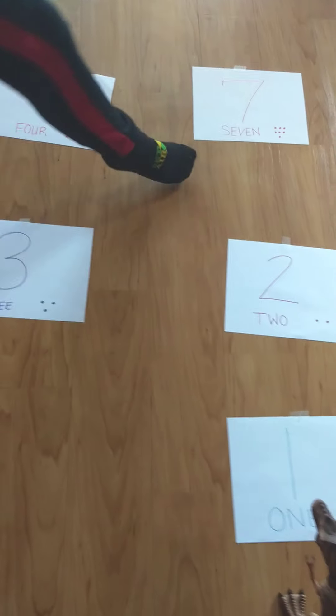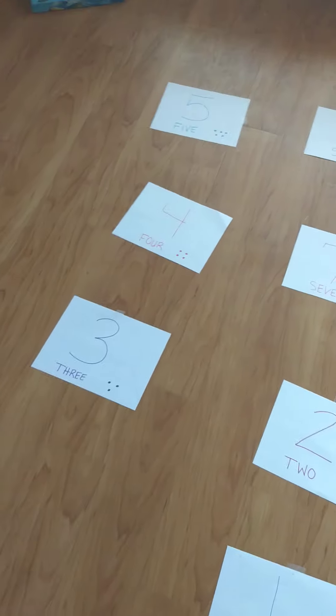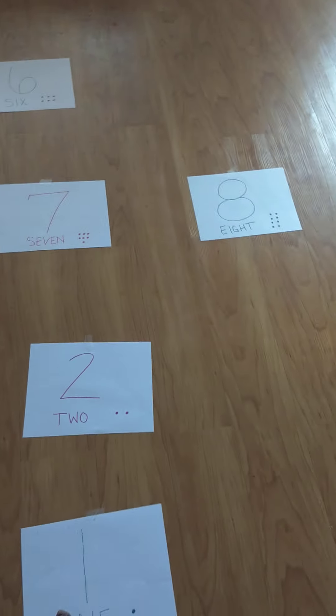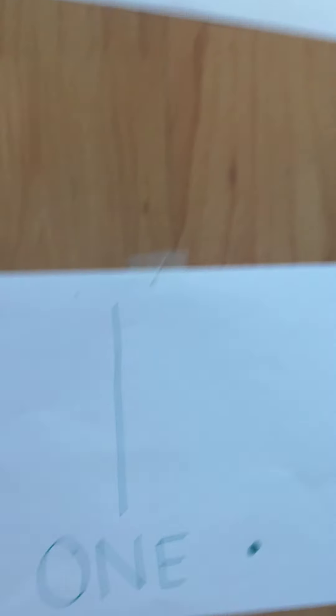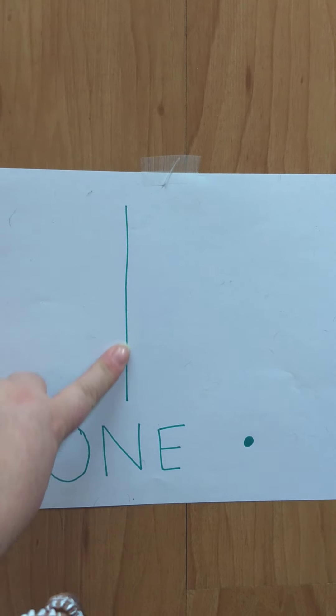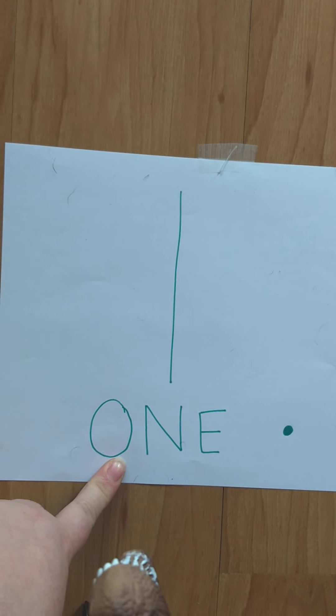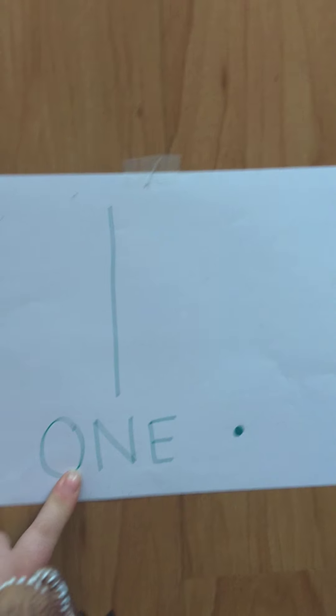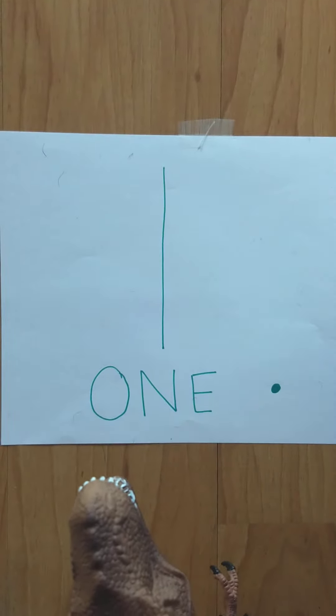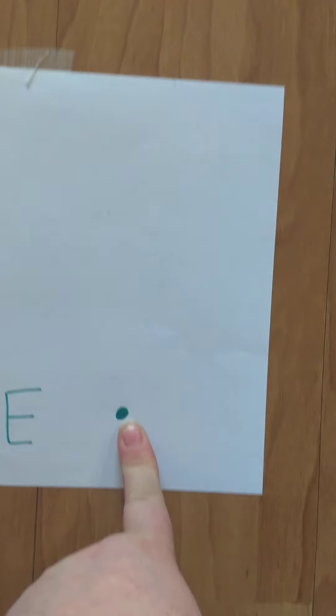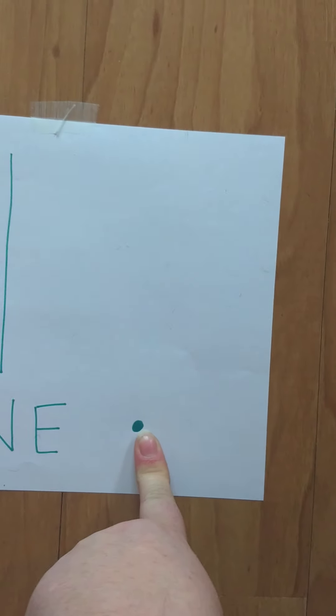Alright, so we're going to do a math scavenger hunt. Now what I did was I wrote numbers on a piece of paper. And I wrote them with the number 1. You can look at the letters that spell 1. Or if you don't know either of those, I drew a little dot. So you can count the 1.